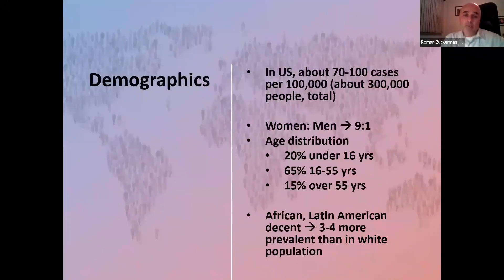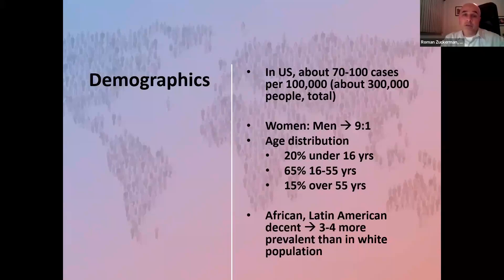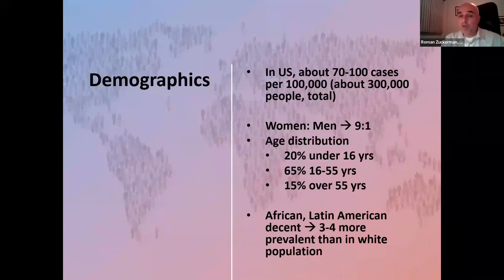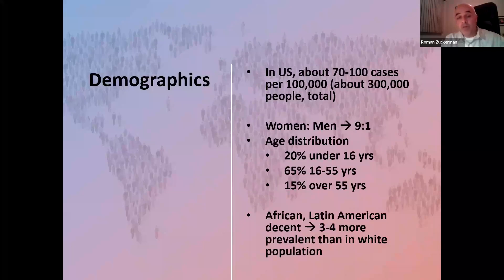Regarding epidemiology and demographics: in the United States, there are approximately 70 to 100 cases of lupus per 100,000 people — about 300,000 people total. Women are significantly overrepresented compared to men, at a ratio of 9 to 1. The majority of patients are diagnosed between the ages of 16 and 55, during the reproductive age. About 20% are diagnosed under age 16 and about 15% later in life. Lupus is much more prevalent in patients of African and Latin American descent.